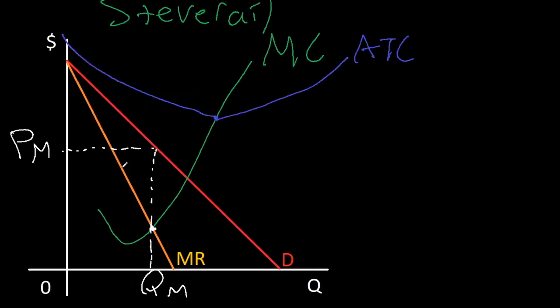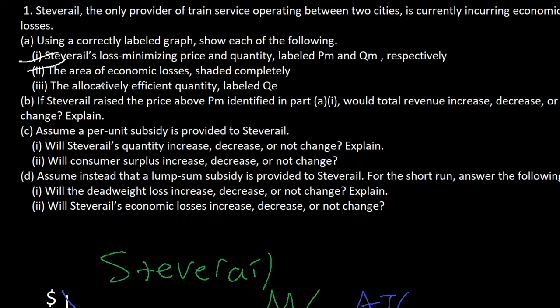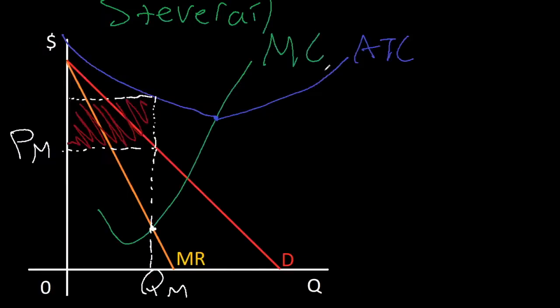Now we have to find the area of economic losses. At this profit maximizing quantity, all of this is their total revenue. However, we must also go up to the ATC curve to find their costs. This will be their economic losses. We now have to look for the allocatively efficient point and label it as QE. Allocatively efficient quantity means the socially optimal quantity. This is where price meets marginal cost, though it's easy to remember as supply and demand. Here would be where MC meets demand, which we go down and label as QE.